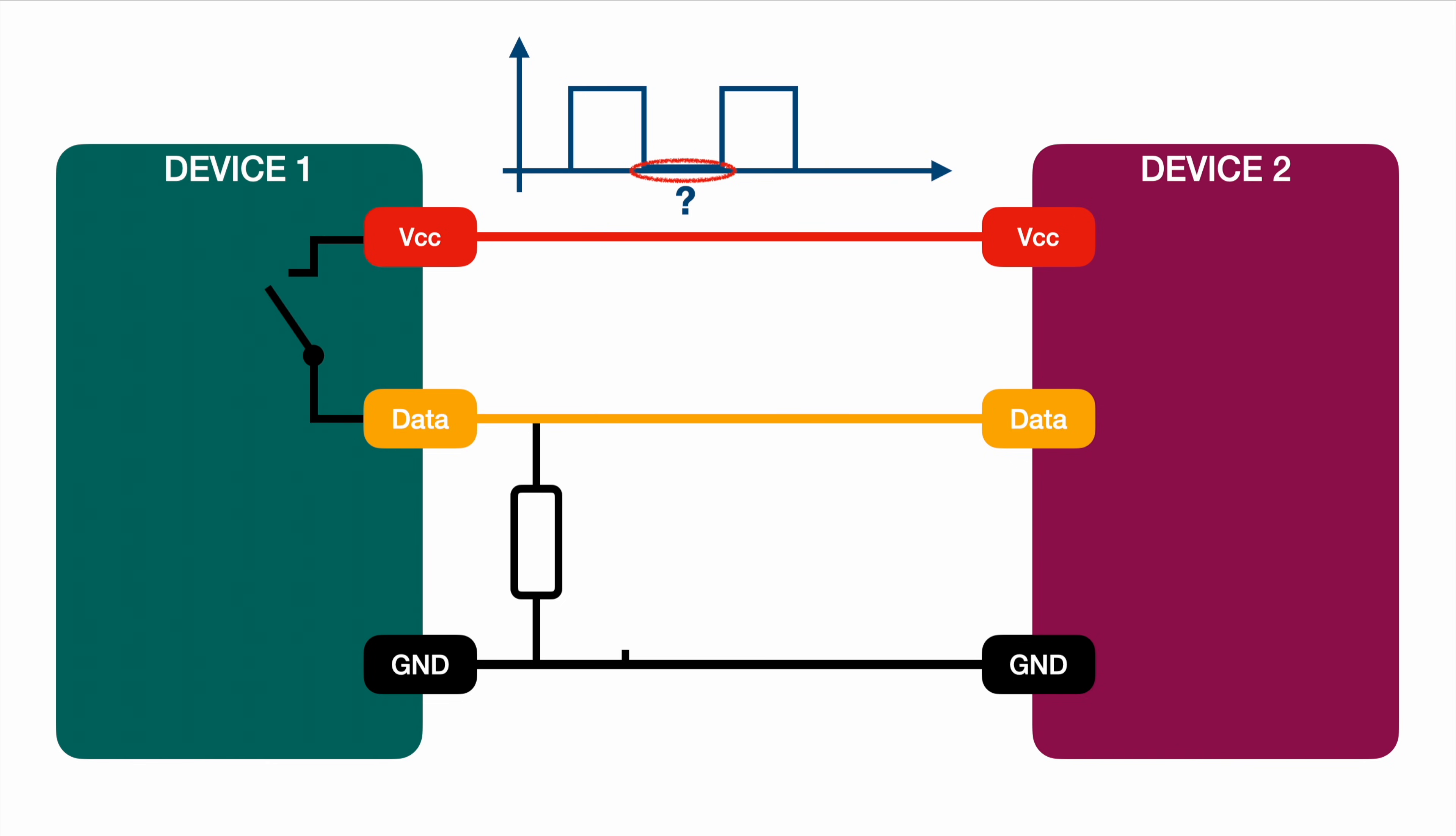You could argue as well that we should connect ground and data directly, but be careful with that because what you're basically doing is connecting directly data to ground, which is a shortcut. So this would work okay as long as the switch is open, but as soon as you close the switch again, you're basically shortcutting V plus directly to ground, which will obviously destroy your pins on your device one as well as on your device two. So you want to make sure that your pull-down resistor is not zero but also not incredibly big.